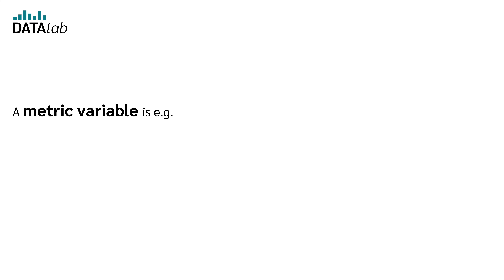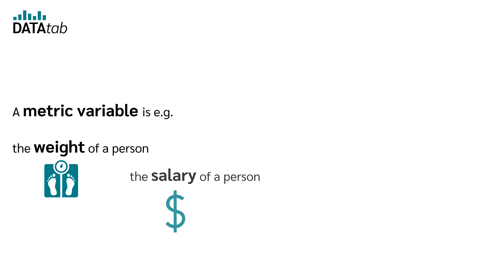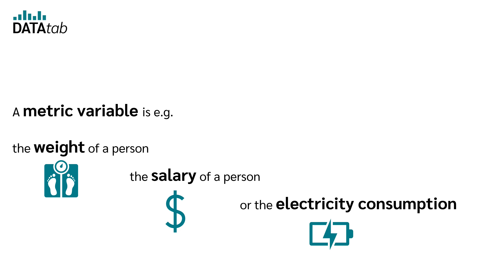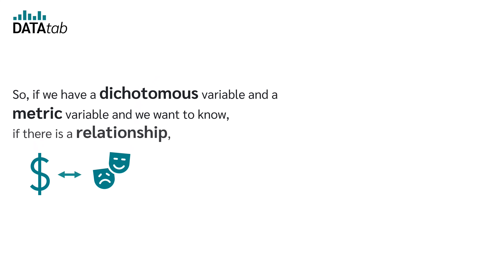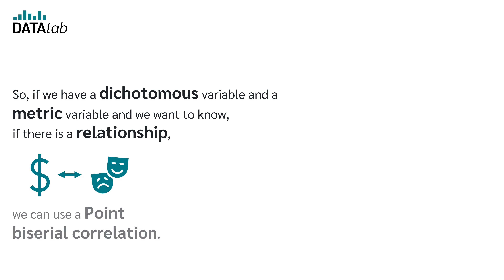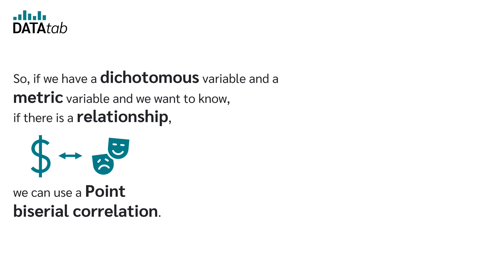A metric variable is, for example, the weight of a person, the salary of a person, or the electricity consumption. So if we have a dichotomous variable and a metric variable and we want to know if there is a relationship, we can use a point-biserial correlation.